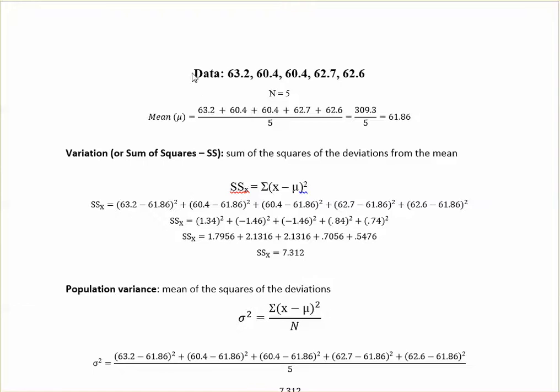So first you've got your data which is 63.2, 60.4, 60.4, 62.7, and 62.6. So the n is 5.